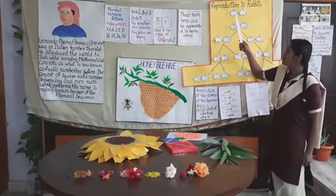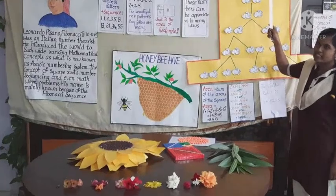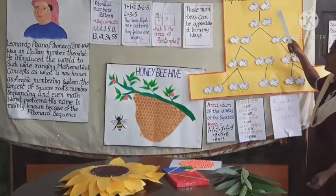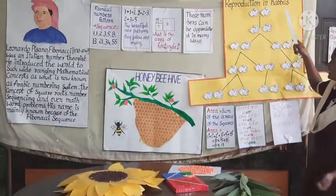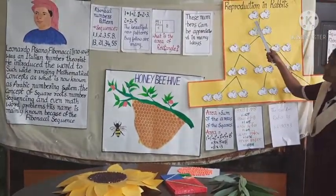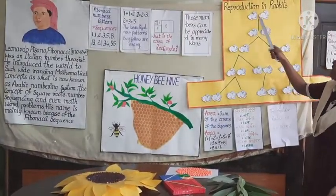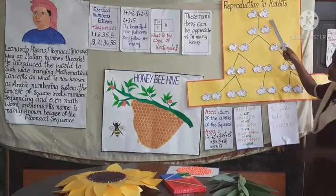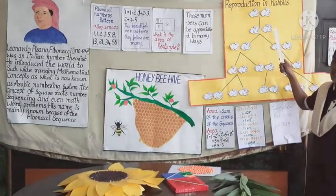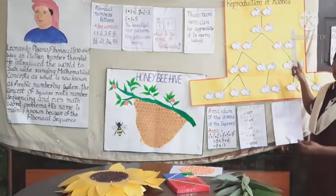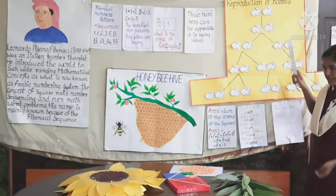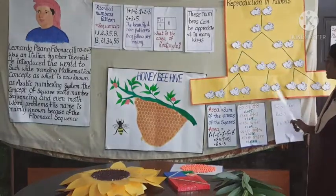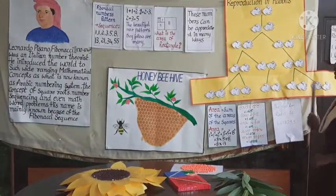Fibonacci put one male rabbit and one female rabbit in a field, and supposed that the rabbits breed infinitely. For every month, the male and female rabbits reproduce one male and one female offspring, following the Fibonacci sequence perfectly. The number of rabbits was determined to be 144.